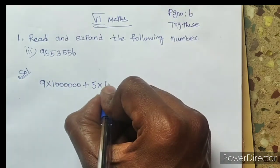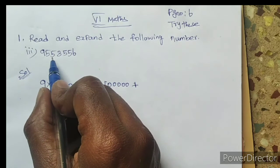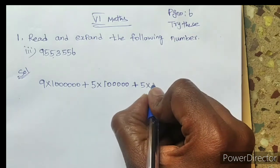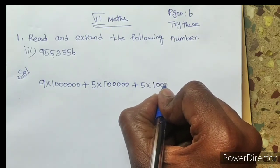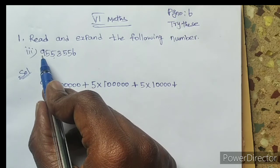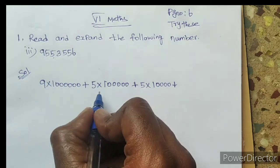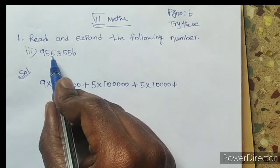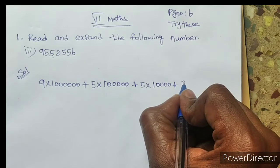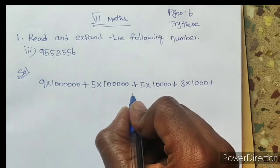Into lakh, that's five zeros because lakh has five zeros. Next, ten thousand place: 5 is in ten thousand place. Ten thousand has four zeros, so 5 × 10,000. Then 3 is in thousand place, so 3 × 1000. Five in hundred place, 5 × 100.